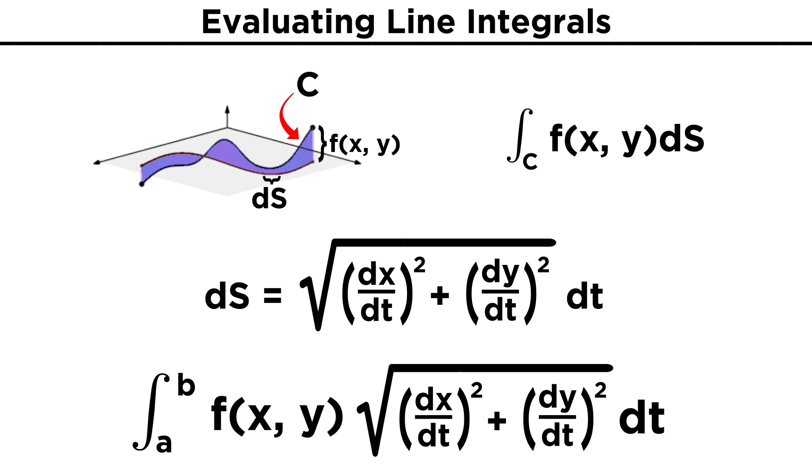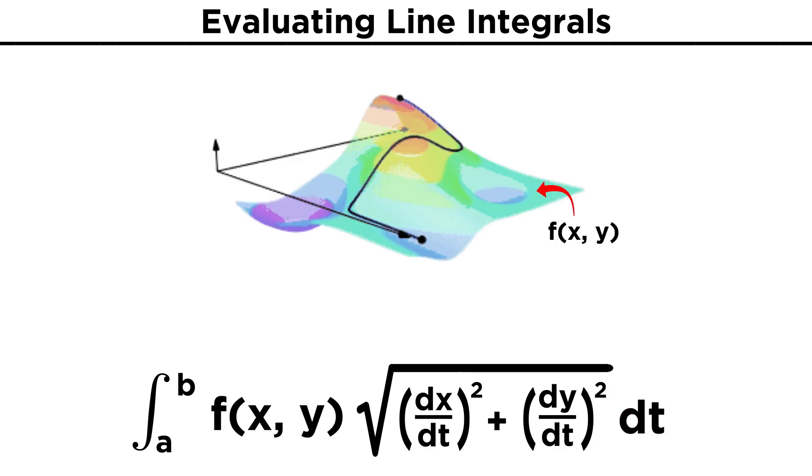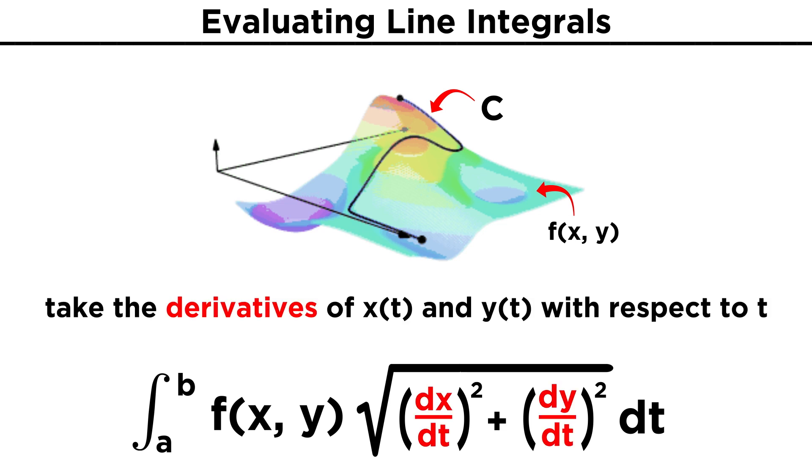Now that we know this, and our integration is in terms of t, we can now express our line integral as the integral from A to B of f of xy root dx dt squared plus dy dt squared dt. So given a surface f of xy and a curve C, we must take the derivatives of the parametric equations with respect to t and plug everything into this equation. Then we integrate from the lower bound of t, which is A, to the upper bound of t, which is B.